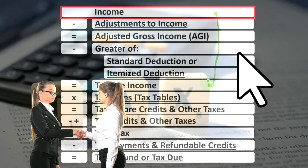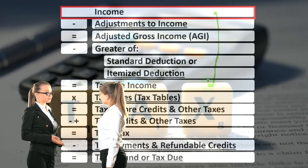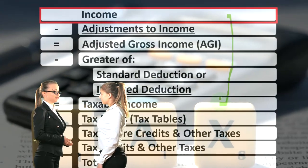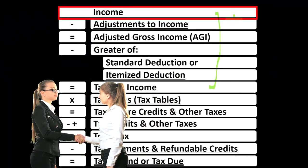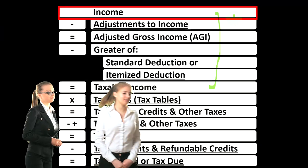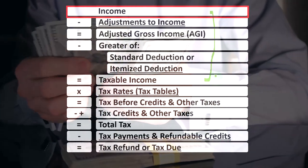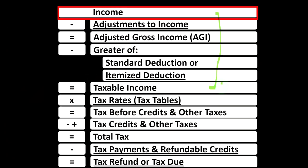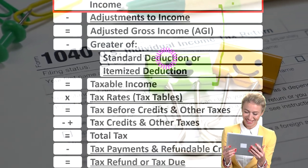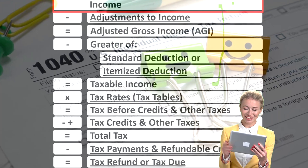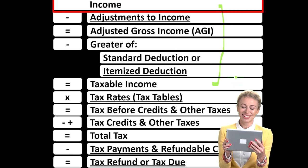An income statement has income minus expenses equals net income. Our goal is normally to maximize net income, so we want income to increase and expenses to decrease. With taxes, everything is flipped on its head. We still have income minus expenses, but the expenses are basically called deductions, and the goal is to get down to taxable income — which we want to be as low as possible. Therefore, we want to decrease income and increase deductions.